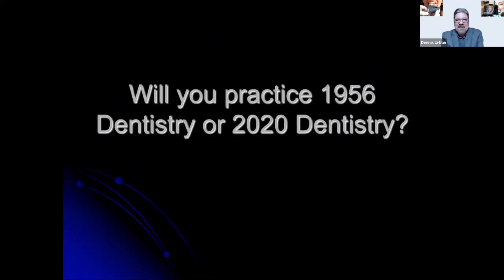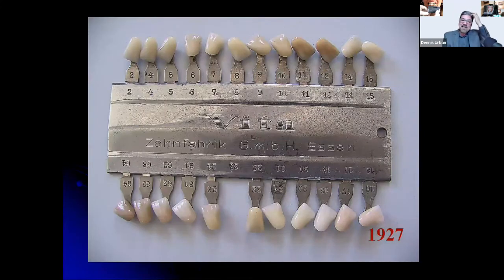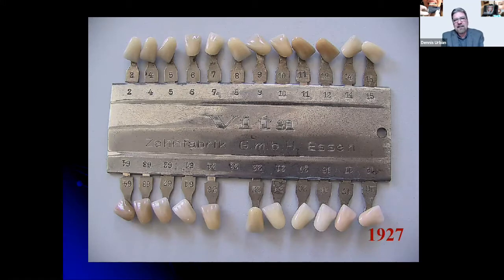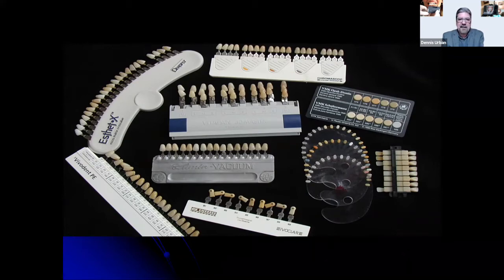Should we practice 1956 dentistry in 2020? One of the earliest shade guides ever made was created in 1956 by Vita — originally made for denture teeth. It was then adapted to the standard Vita Classical shade guide. When it came to taking shades for porcelain restorations, a more scientific approach was needed. Many shade guides on the market claim to match Vita shades but they're close, not exact. Our laboratory standard is using Vita Classical and Vita 3D Master shade guides.